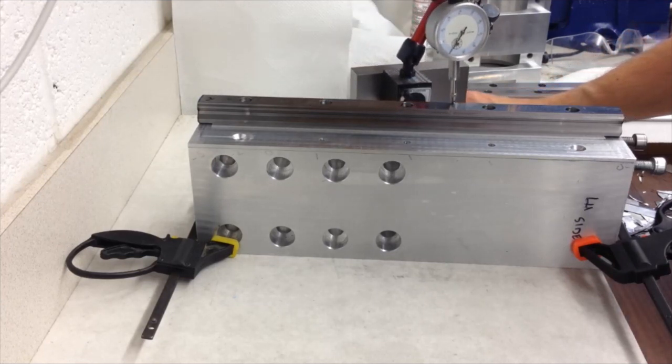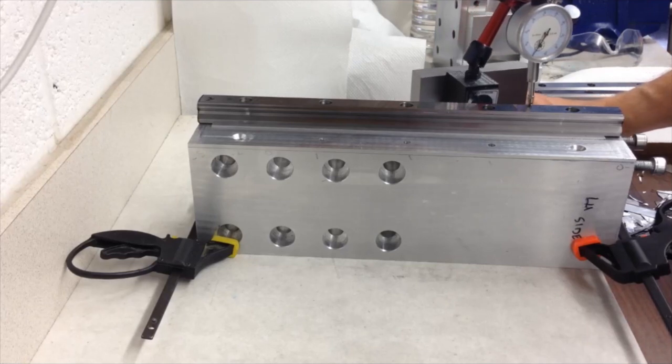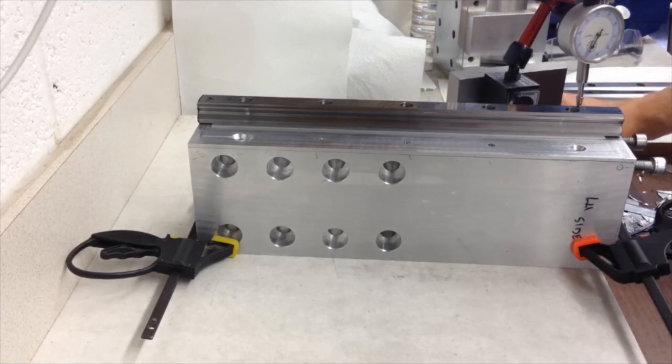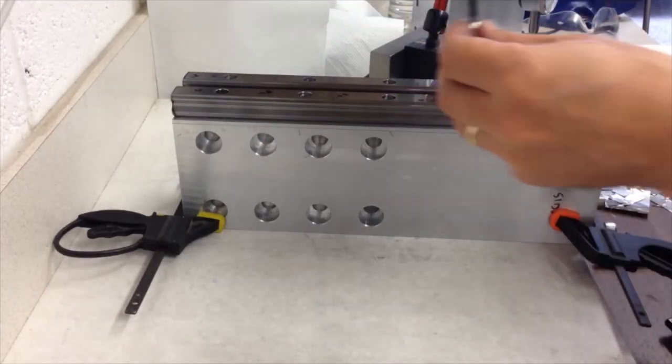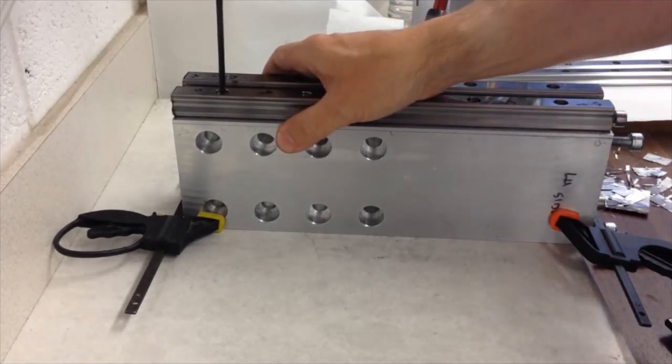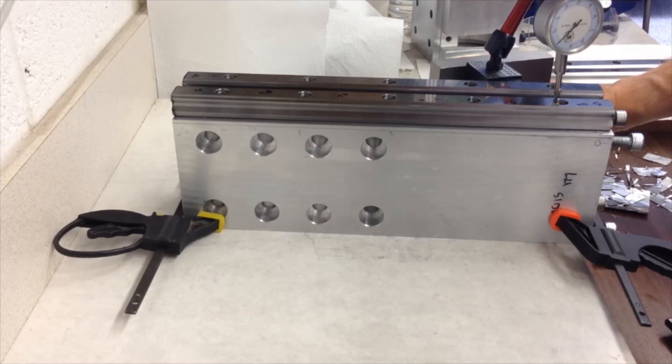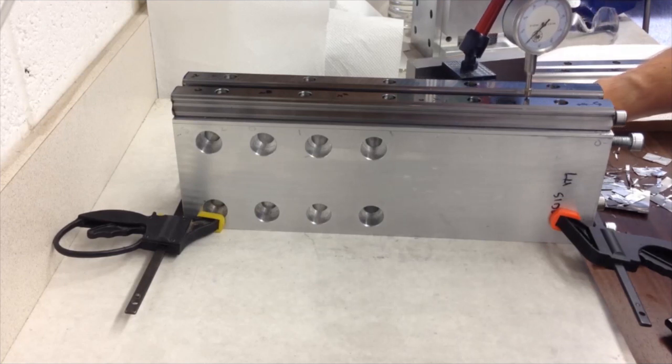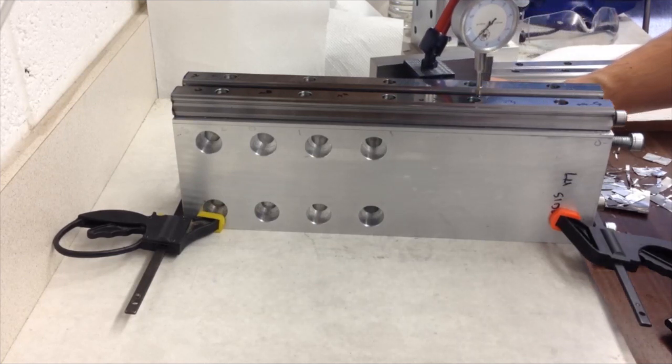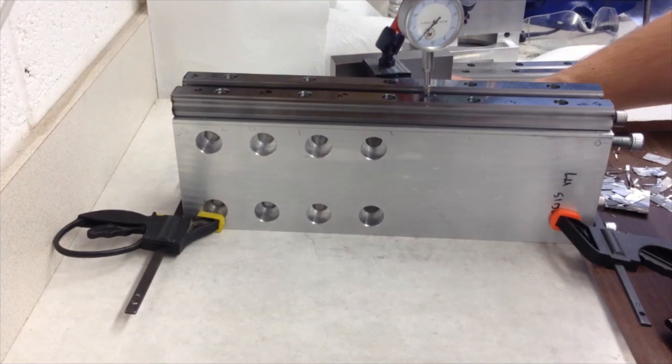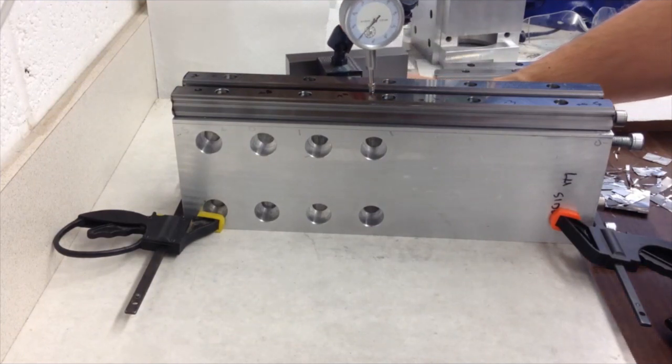Now also somebody commented it's not a good idea to indicate the top of the rail, and having a think about it yeah I think they're right, so this is not the best way to do it. You should put the carriage on then indicate off that or indicate off the actual ground ways themselves where the balls run in the sides, but this is what I did at the time, it's a couple of years back now.